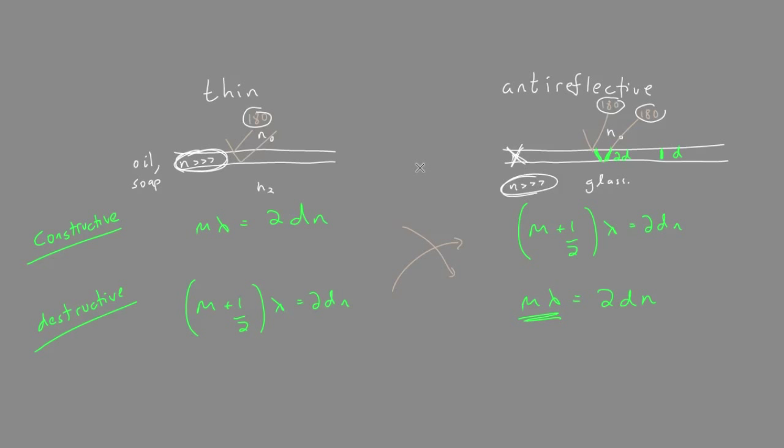What does that mean for the equations? It means that we actually switch. So we're switching the equations for constructive and destructive interference now.